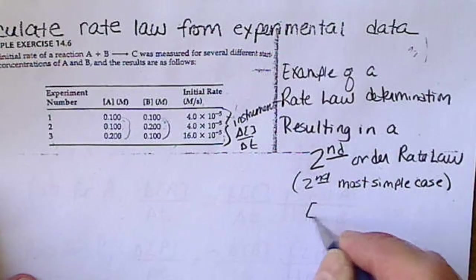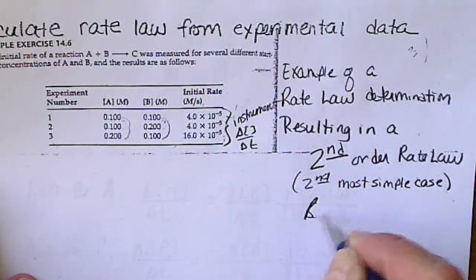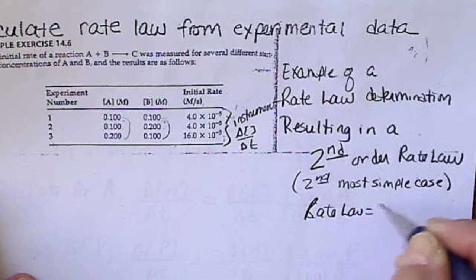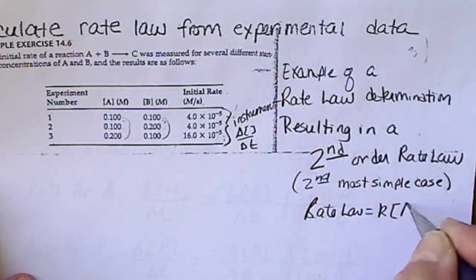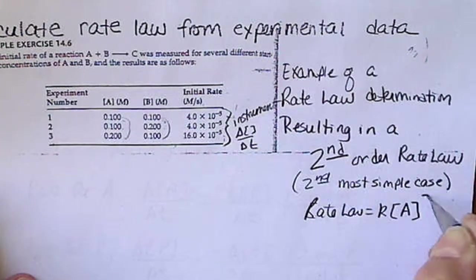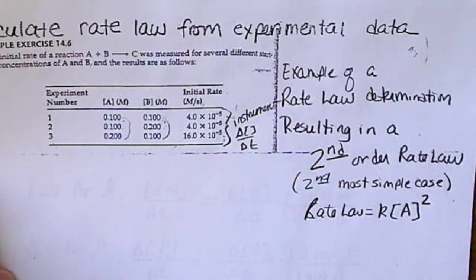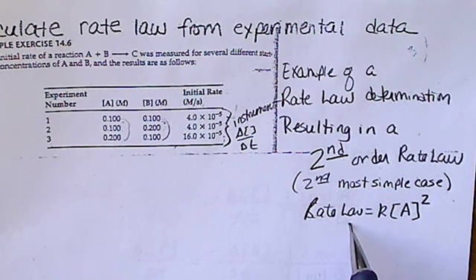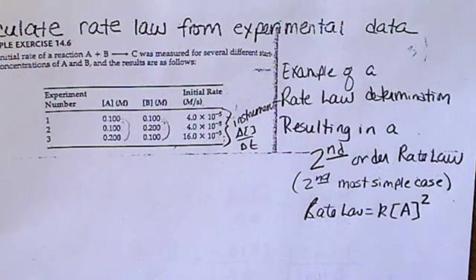So, we're going to see that we end up with the rate law is K times A squared. And there is going to be no B term. And second order means that we can do some algebra and find a concentration at any time T, and vice versa.